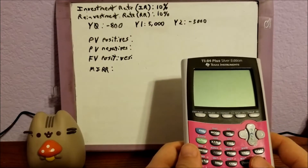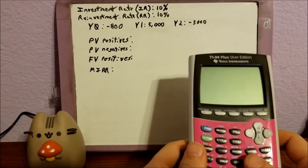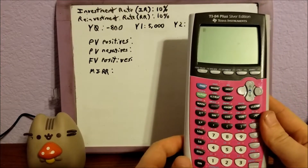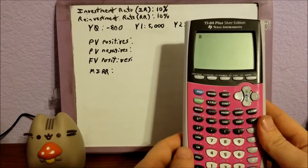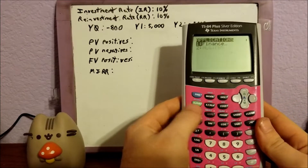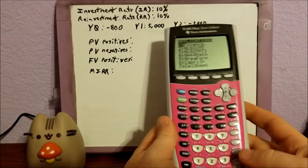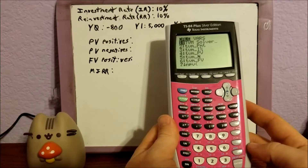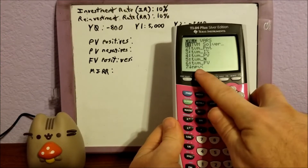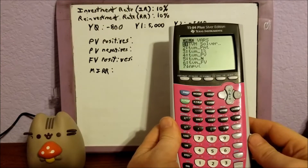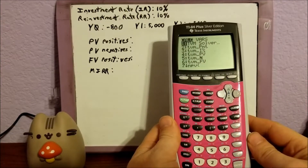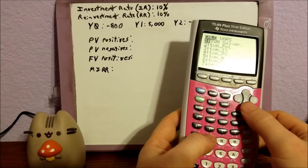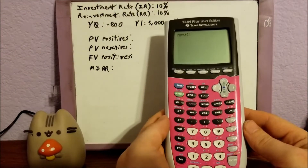So the present value of the positives — let's get started with that. I'm going to turn on our calculator, hit Apps, go to our finance calculators, and then down at the very bottom, number seven, NPV — net present value. I'm going to hit seven for that; I could arrow down, but this is faster.